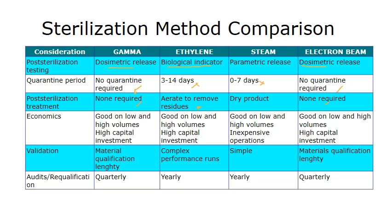All methods require high capital investment, but once the investment is in, they are all good for coping with low and high volumes. The main thing to note in validation is that there are complex performance runs for ethylene oxide, and the material qualification is very lengthy for gamma and electron beam.